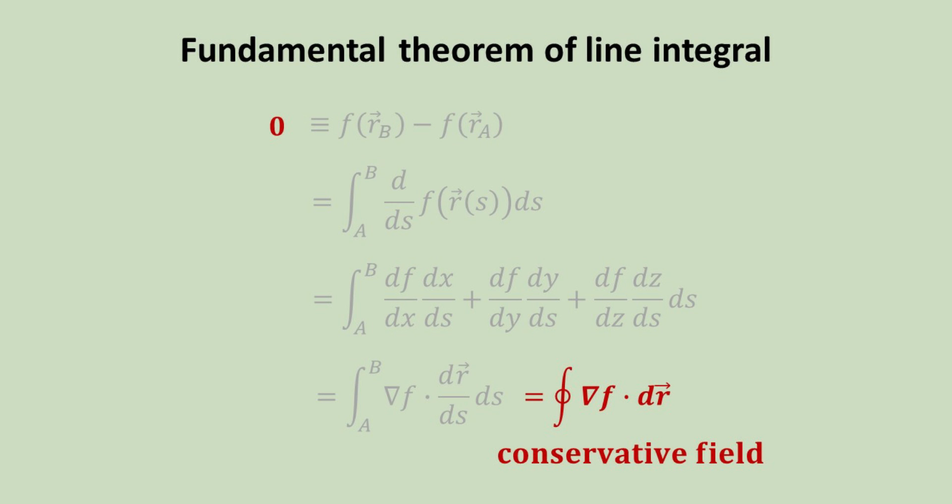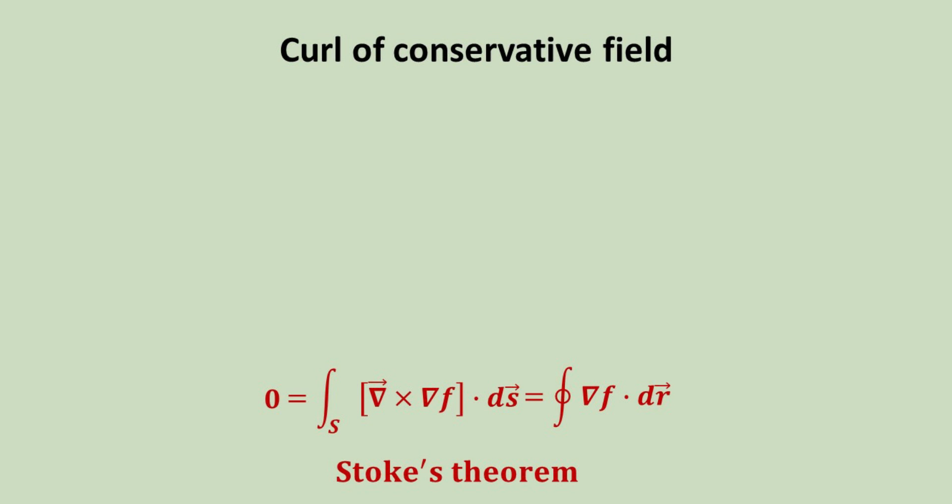By extension, if the path is a closed loop, or in other words, A equals to B, then the line integral of the gradient field must be zero. This is the reason why it is called a conservative field. The line integral over a closed path is conserved to be zero. By the Stokes theorem, this also implies that the curl of the gradient field, integrated over the closed surface, must be zero. Since this holds for any closed surface, this implies that the curl of the gradient field must be uniquely zero at every point in space. To paraphrase, the gradient field must be irrotational.